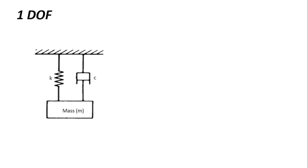Commencing with one degree of freedom systems, we can have a system model with a mass, one spring, and one damping element. This mass may be undergoing longitudinal vibration along the axis of the system. At every point in time we can describe the displacement of the mass by x. When the mass moves downward the spring extends, and when moving upward the spring and damper compress. This system has one degree of freedom.